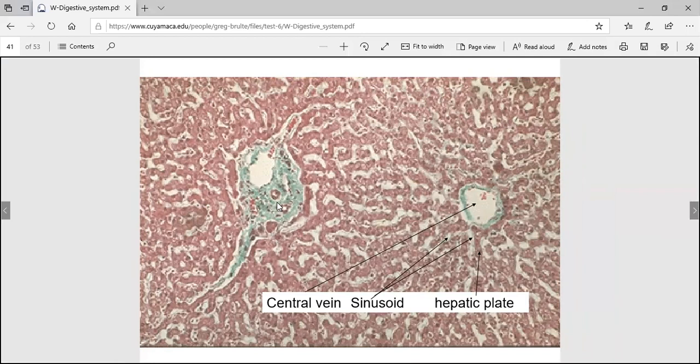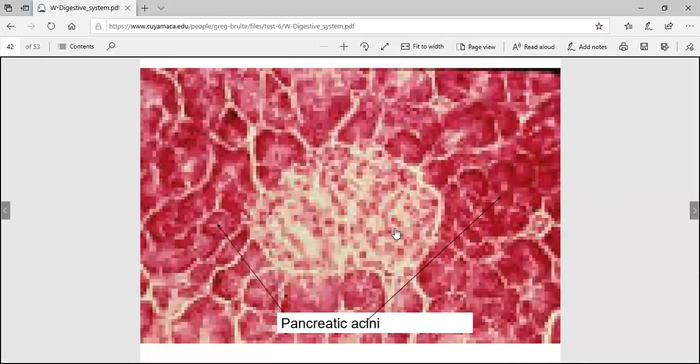This is a triad, kind of hard to see the three but they're in there. That's a central vein. You see the way these little hepatocytes are like spokes of a wheel going out. Those are called hepatic plates. The little spaces in between are called sinusoids. You would have six of these around. This is human, a pig liver actually looks a lot better.